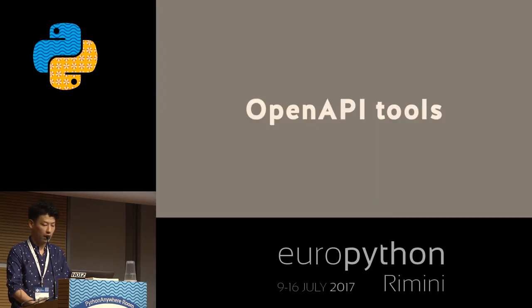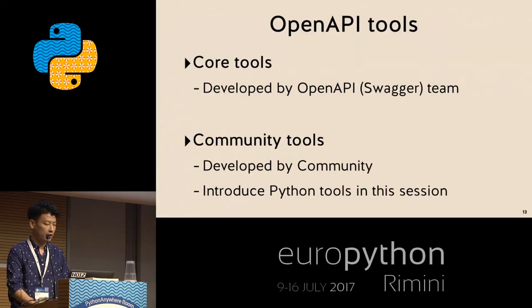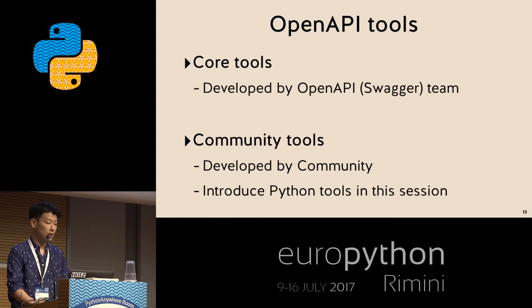Next, OpenAPI tools. There are two big categories. One is core tools, developed by the OpenAPI/Swagger team — official off-the-shelf tools. The other is community tools, developed by software engineers all over the world. Because this is PyCon, I will introduce Python tools in this session, but you can find tools for many other languages as well.